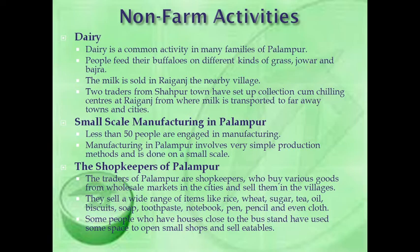Another non-farm activity is small-scale manufacturing. In Palampur, less than 50 people are engaged in manufacturing. Manufacturing in Palampur involves very simple production methods and is done on a small scale. The traders of Palampur are shopkeepers who buy various goods from wholesale markets in the cities and sell them in villages. They sell a wide range of items like rice, wheat, sugar, tea, oil, biscuits, soap, toothpaste, notebook, pen, pencil and even cloth.